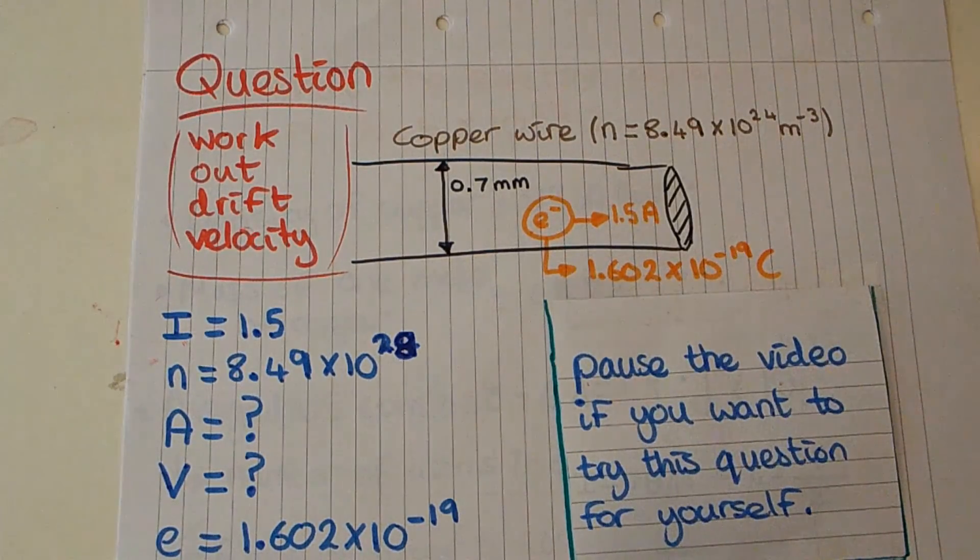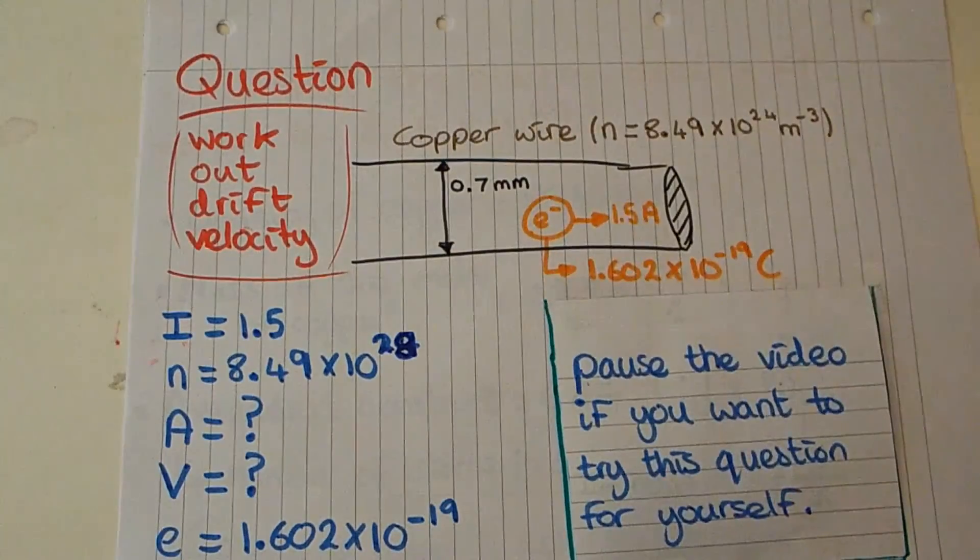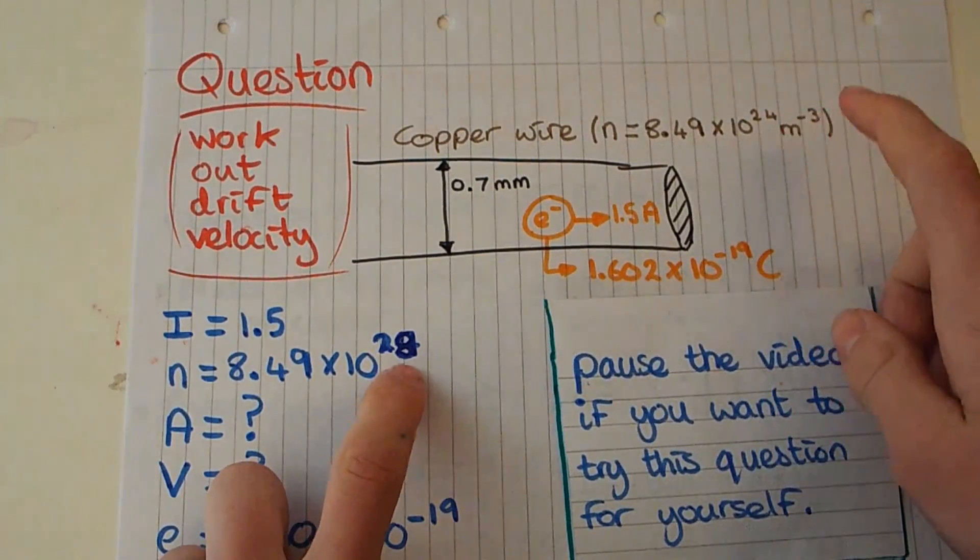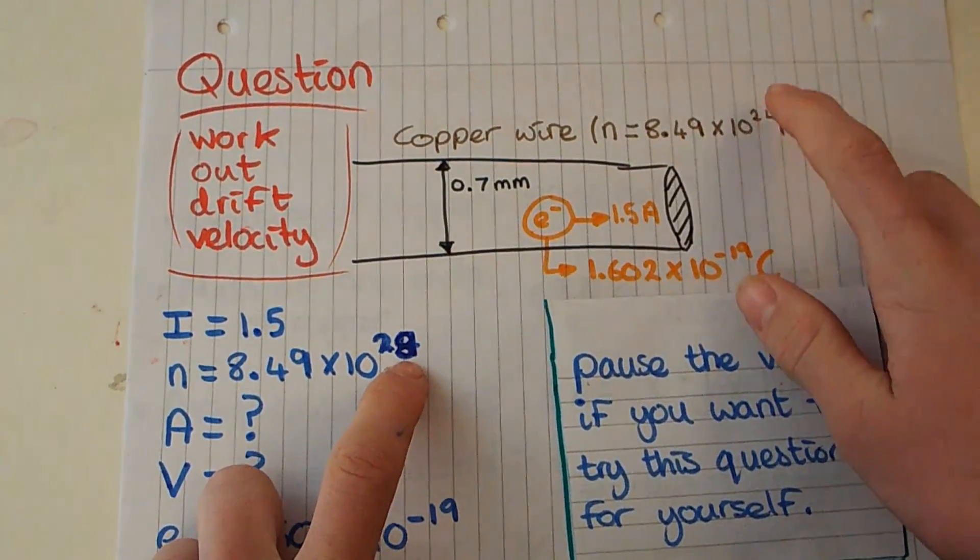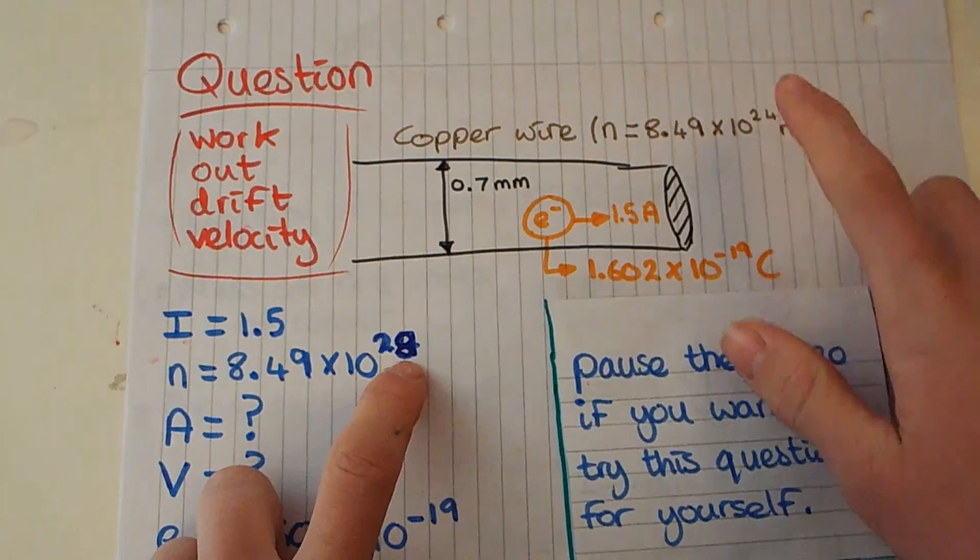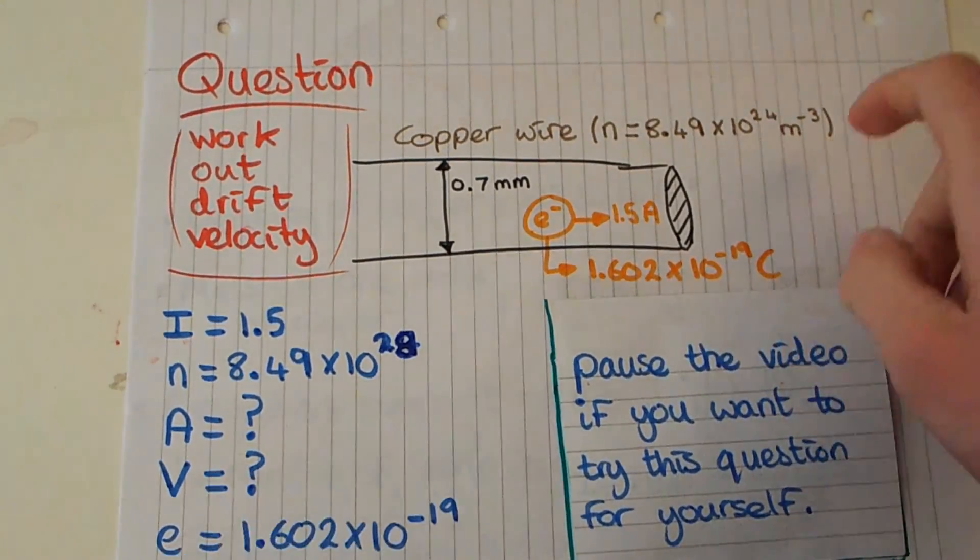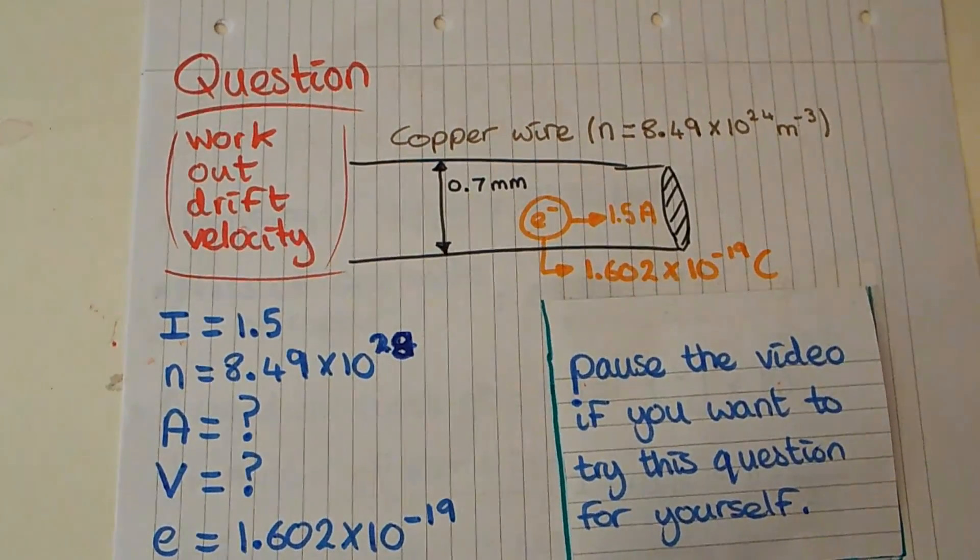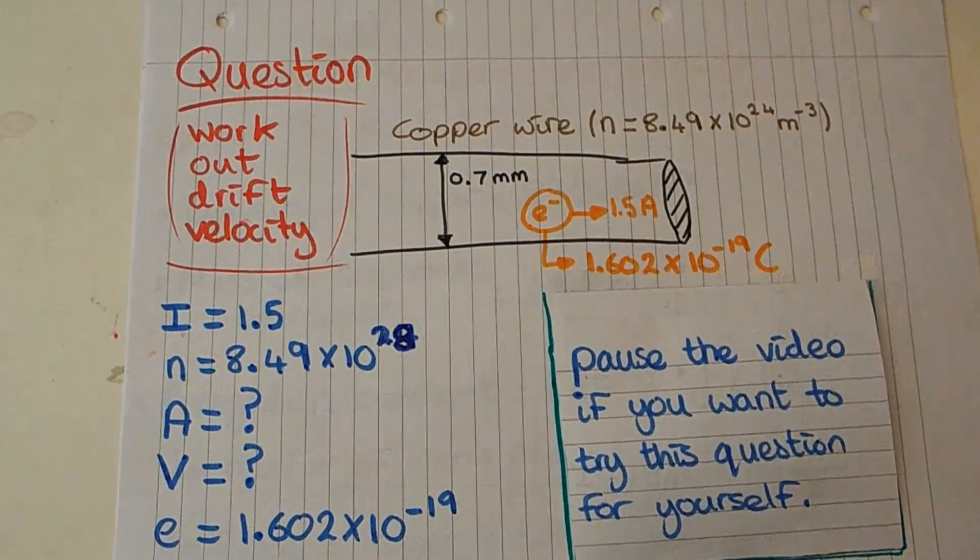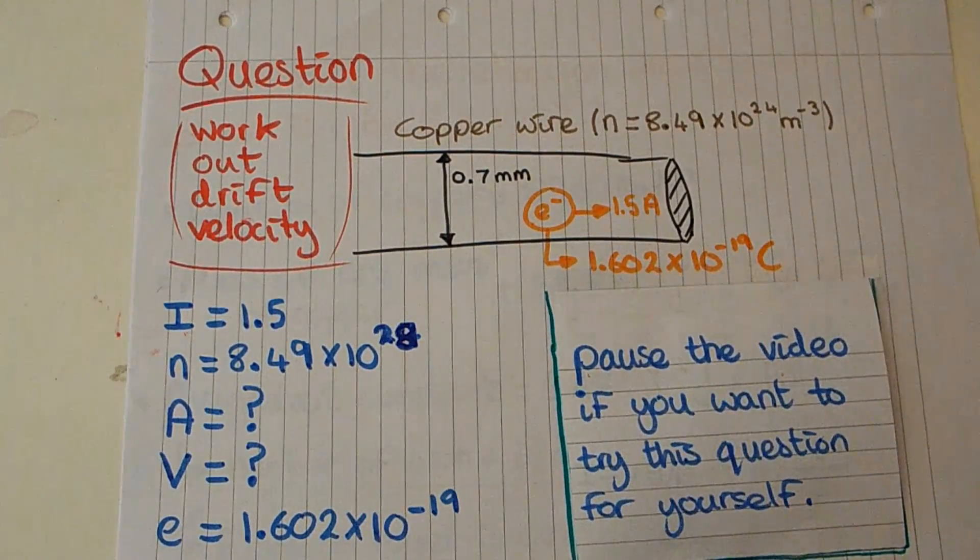If you want you can pause this video, take a second to figure out how you're going to do this question. Oh yeah also, it's not 24 sorry, I've written 28 there and then 24, that should be 28, 8.49 times 10 to the 28 per meter cubed. Sorry about that.